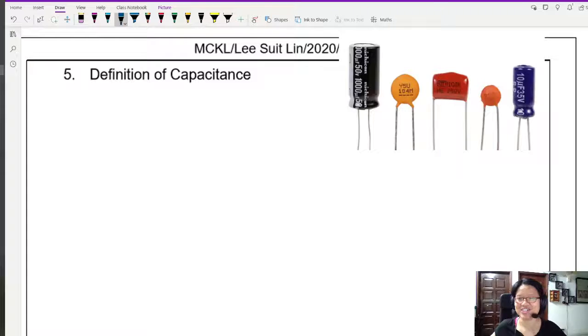So you can see here, I put a bunch of capacitors. So you might be thinking, Miss, this one don't look like parallel plate one. The first one on the left, the black one, this is the more common resistor. This is the parallel plate. Miss, where is the parallel plate?